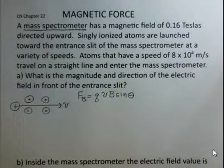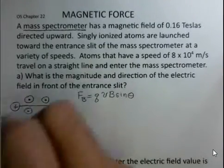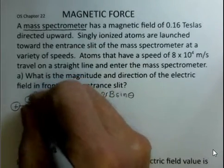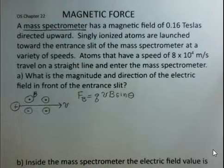This problem concerns a mass spectrometer. We'll be taking a look at magnetic and electric force, but the bulk of this will be on the magnetic force. We have a magnetic field in the whole region of 0.16 Teslas directed upward out of the page. That's the purpose of these circles with a dot at the center showing that B is upward out of the page.